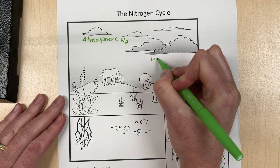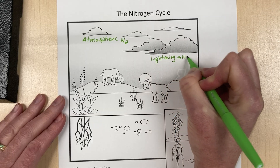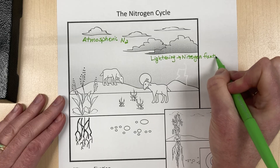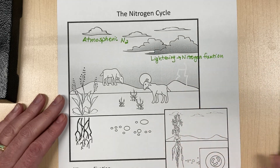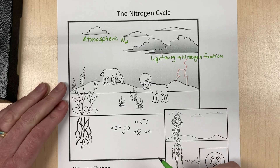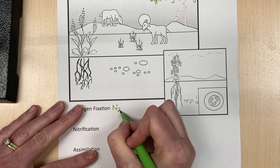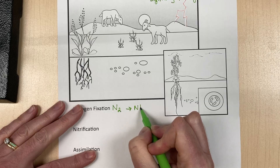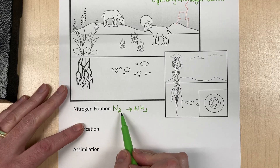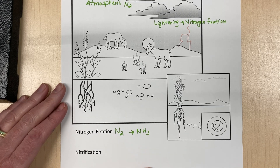Nitrogen fixation can happen in a couple of ways. You can have lightning, and then you can also have it through bacteria. Here's our lightning here — it's not as common a way to have nitrogen fixation. But basically, nitrogen fixation is when N2 turns into NH3. This is not a balanced equation like in chemistry — you basically need to know that nitrogen gas goes into ammonia, and then forms ammonium.